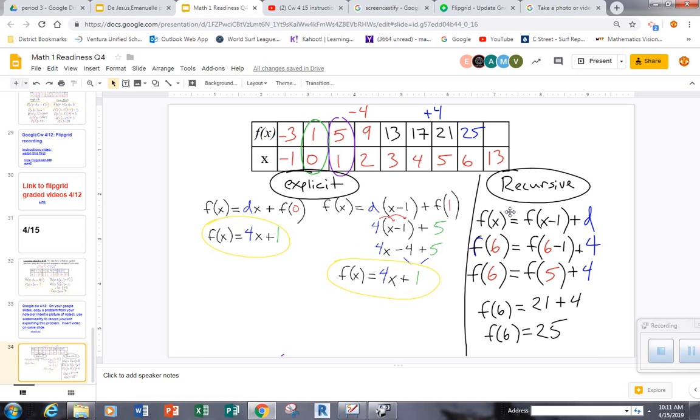This third one just shows the recursive pattern notation here to find any number in the sequence. To find this sixth number, I use the one before it, the fifth one, and add that four.